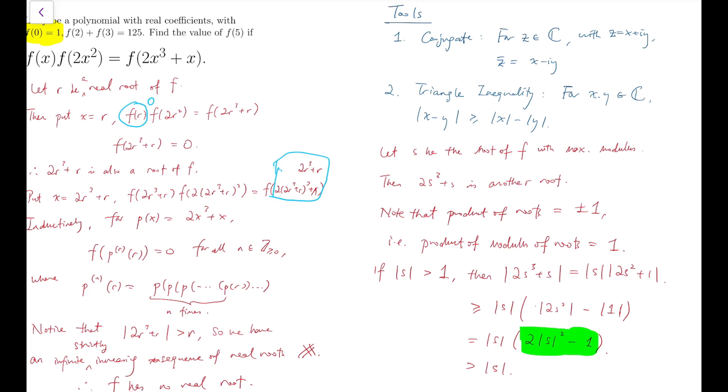So we found out that the modulus of another root, 2s³ + s, is greater than the modulus of s, which we assume that to have the maximum modulus. So here's the contradiction.